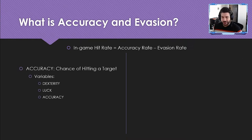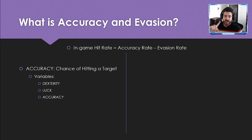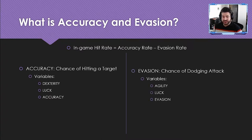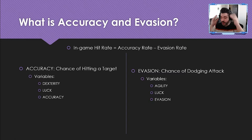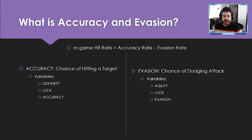Accuracy is your chance of hitting a target. It's made up of three variables: dexterity, luck, and accuracy percentage points from external sources. Evasion is your chance of dodging an attack, made up of agility, luck, and external evasion percentage. Notably, luck appears in both formulas and affects both proportionally in terms of adding to percentage points.